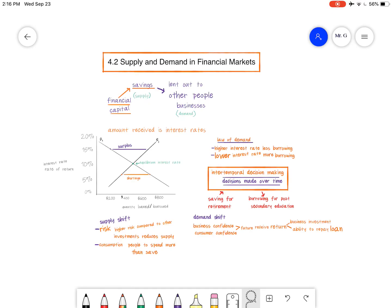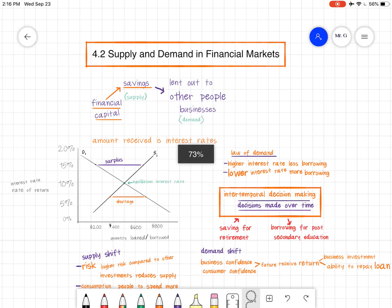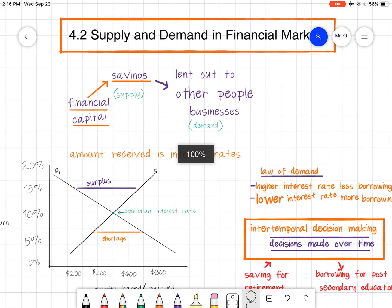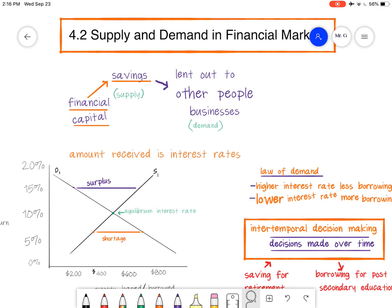So if we look at it, first of all, we're looking at savings, which we call financial capital. In this case, it's going to be the supply. And then we lend out money to other people and businesses, and that is demand. When we're looking at our graph, the supply line is basically those people who are choosing to save their money. And you've got to remember when you save money in a bank, they take that money and lend it out to other people. So that money is then available for other people to borrow.